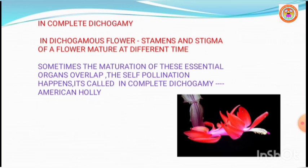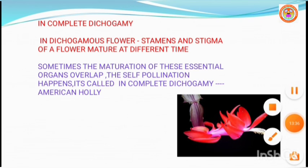Dear students, up to this point in the video, you should understand what is meant by pollination, what the two kinds of flowers are — chasmogamous flowers and cleistogamous flowers — and the types of pollination, in which we discussed self-pollination. In the next class, we will continue with cross-pollination. Thank you.